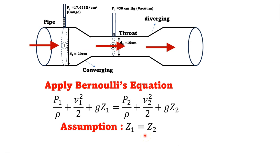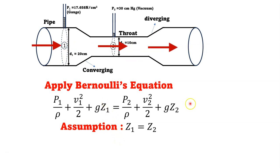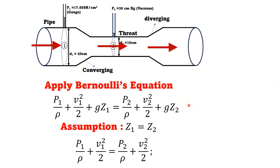Since the Venturimeter is horizontal, we assume Z1 = Z2, so the elevation terms cancel. The simplified Bernoulli's equation becomes: P1/ρ + V1²/2 = P2/ρ + V2²/2.